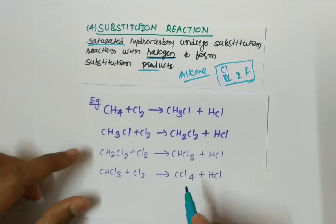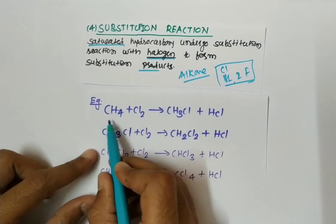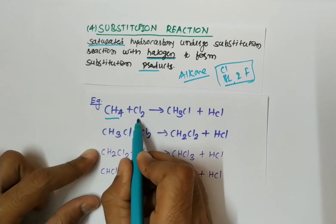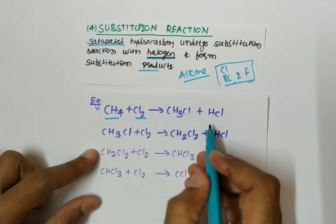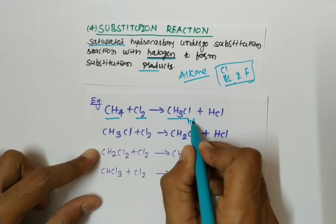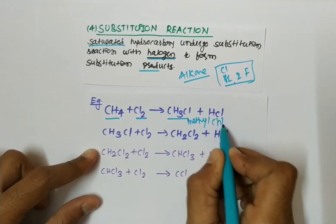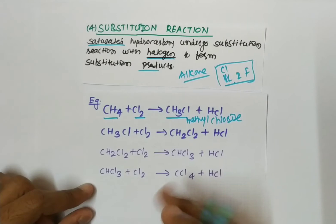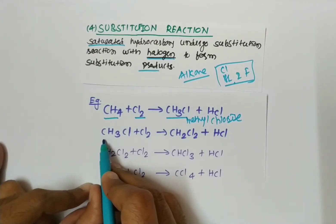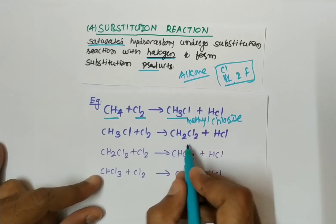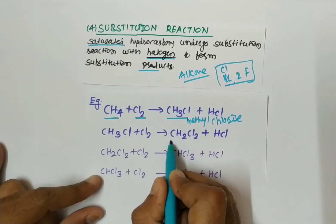See the examples. First example: CH4, that is methane, reacts with Cl2, a halogen, to form CH3Cl, that is methyl chloride. Another example: CH3Cl, methyl chloride, reacts with Cl2, chlorine gas, to form CH2Cl2 and HCl.